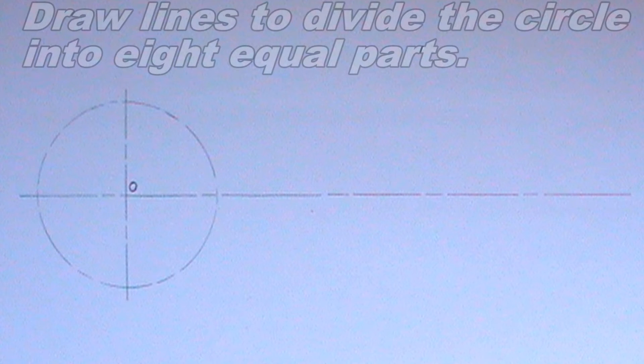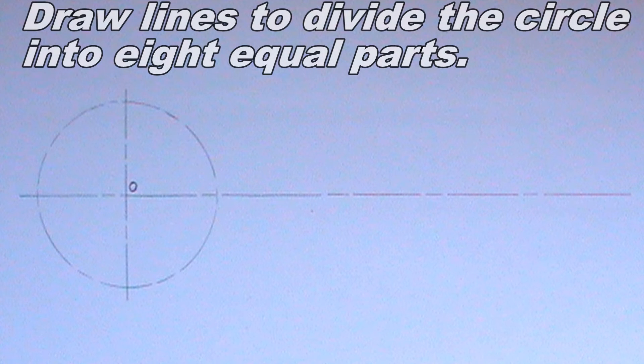The next thing I will do is to draw lines to divide the circle into 8 equal parts. This step can be done using a 60 degree set square and a T square.